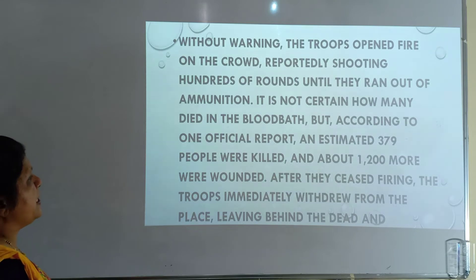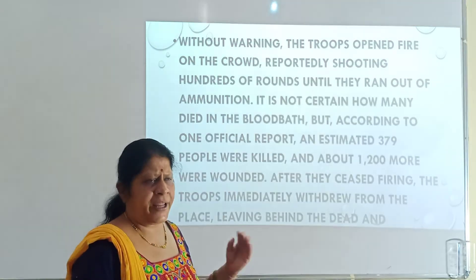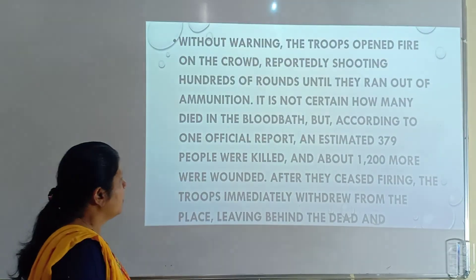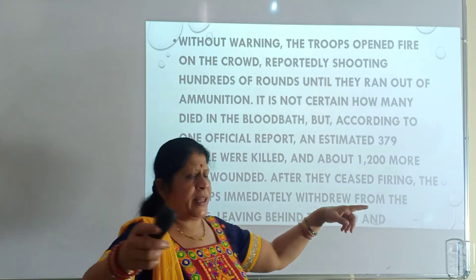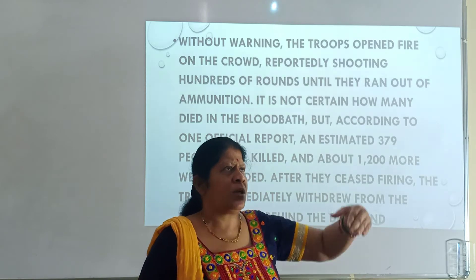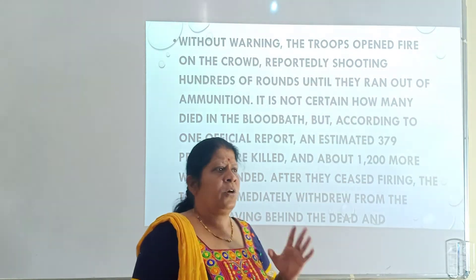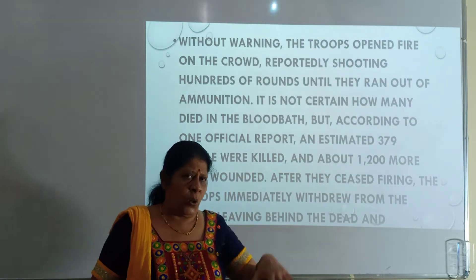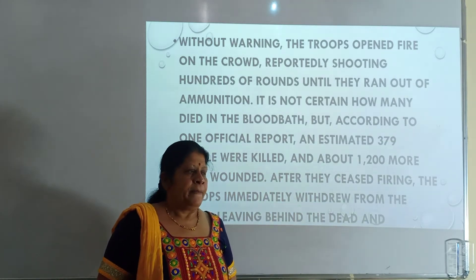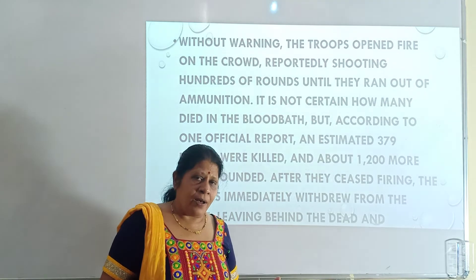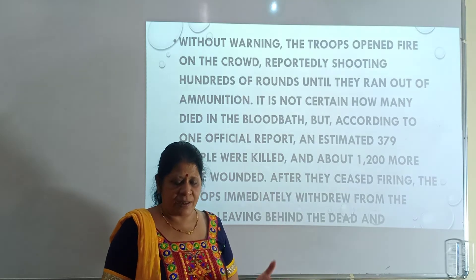An estimated 379 people were killed, including women, children, men — old and young alike. The surrounding wall was quite high, so people tried to climb over it to get to the other side. There was also a well there, and they tried to jump into it. It is said that the water of that well was bloody for many days and years afterwards.